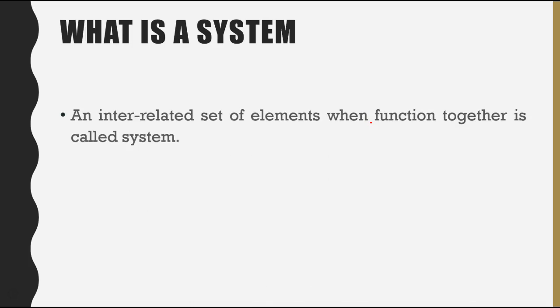Let us begin with what this system approach of HRM is all about. First of all, let's talk about what is a system. An interrelated set of elements which function together is called a system. We have seen a lot of systems, machines with different components. For example, we can look at a refrigerator, air conditioner, or any kind of system in which there are different kinds of components. When they function together, then your system is completely functional. If there is one component missing, then the system will not work.